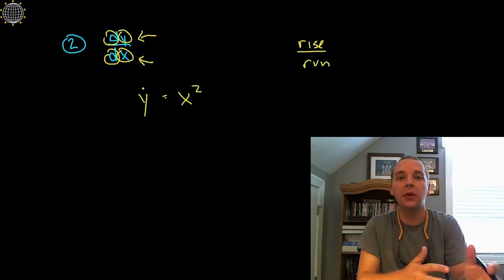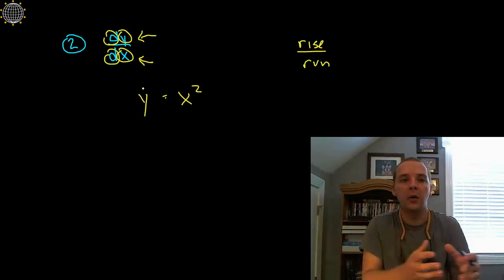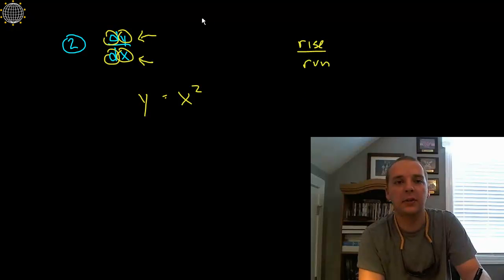We're finding the derivative of y, the rate of change of y with respect to whatever x is doing. So that's kind of a slope notation there. It's very easy to use.